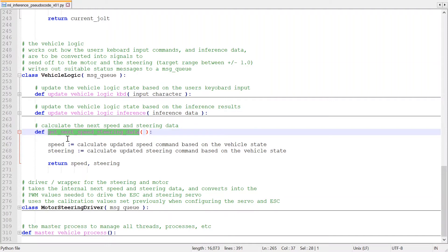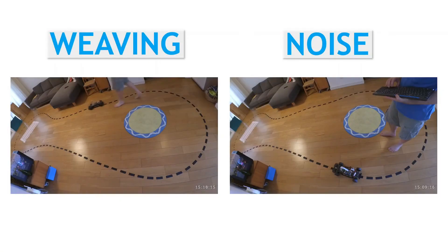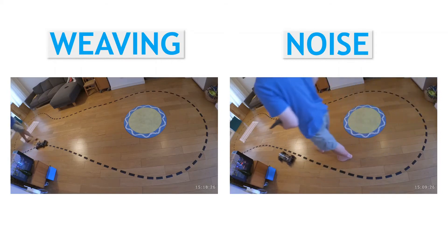That kind of wraps up the two tweaks we can apply to behavior cloning. They both just change slightly the way the training data is collected. Now let's give them both a go. Let's go collect some new training data.